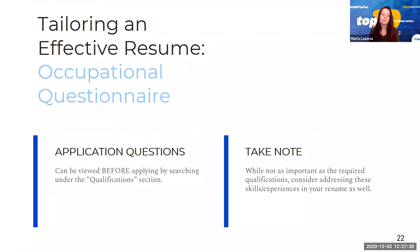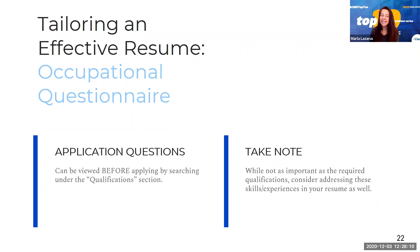The application questions can be reviewed before applying, so you don't have to start the application process to see them. While the questionnaire is not as important as the qualification section, those questions were important enough to be included. After you make it through the qualifications piece, you also need to be well-received enough to get a call for an interview. Even if you're on the list of qualified applicants, the manager still chooses who to interview — and that's typically based on the resumes they're looking at. From experience, most managers review resumes to make decisions on who they want to interview.